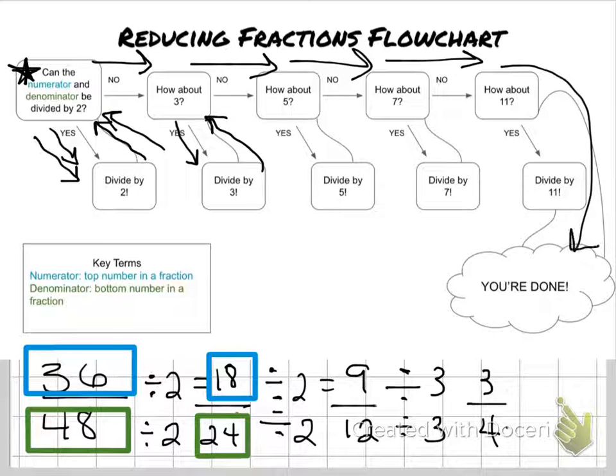And then I go down to the you're done box. So this lets me know that my final answer is going to be 3 over 4. And this just basically means that I was able to reduce or simplify 36 48ths to 3 over 4.